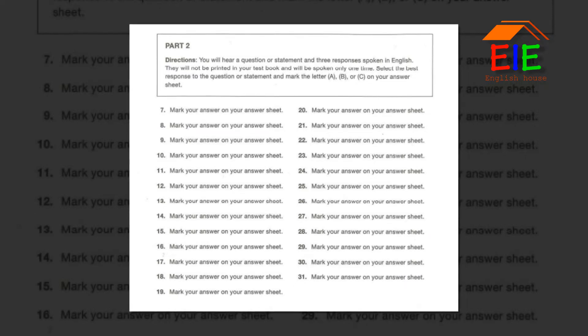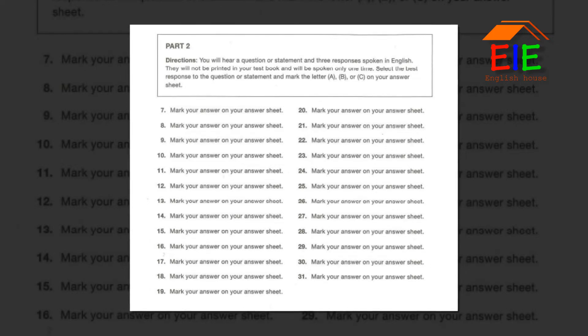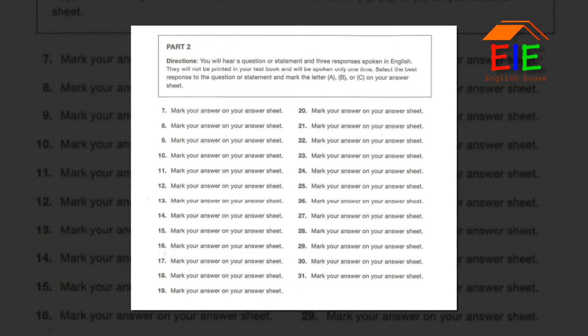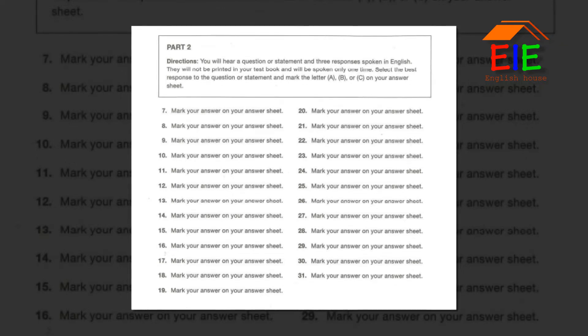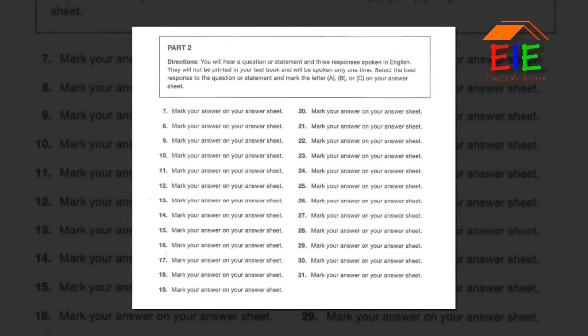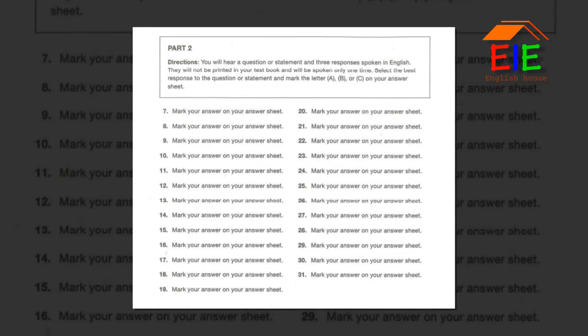Number 14. Is there a code to unlock the door, or is it open? A. It should be open. B. There's a clock in here. C. Just around the corner. Number 15. What color folders would you like me to buy? A. I'd prefer the blue ones. B. Yes, please hold this for me. C. At the stationery store.